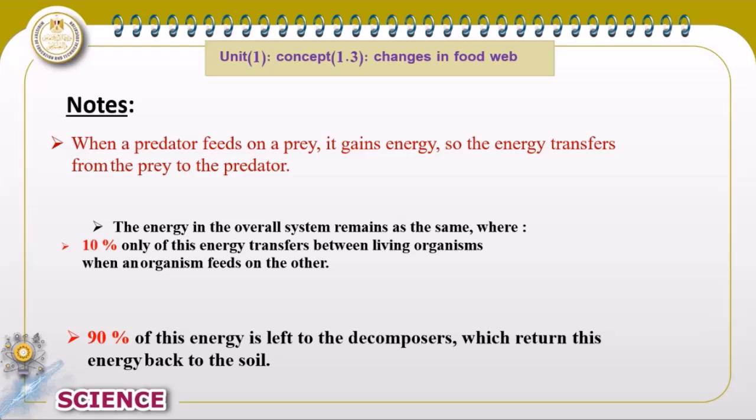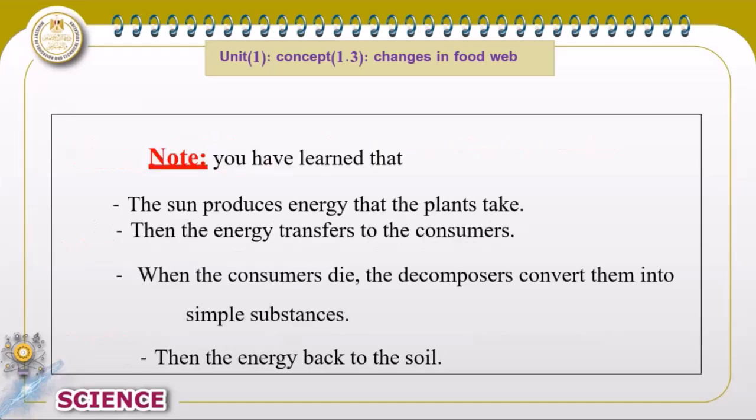Finally, this energy returns to the soil through the effect of decomposers, because decomposers feed on dead organisms and return energy back to the soil. The sun is the source of energy — the plant, which is the producer, takes this energy and makes its food by photosynthesis, converting sunlight into chemical energy stored in the plant's body. This chemical energy transfers to consumers, and when consumers die and decompose, the energy returns to the soil.